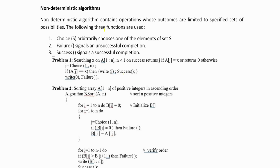Speaking of non-deterministic algorithms: non-deterministic algorithms contain operations whose outcomes are limited to specific sets of possibilities. Three functions are used: the choice function, which arbitrarily chooses one element from a set S; failure, indicating unsuccessful completion; and success, indicating successful completion. For example, searching for X in an array of n ≥ 1 elements: J is choice. If A[J] equals X, we write J as success; if not, we write J as failure and return 0.